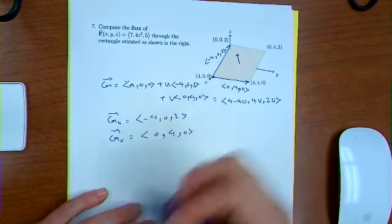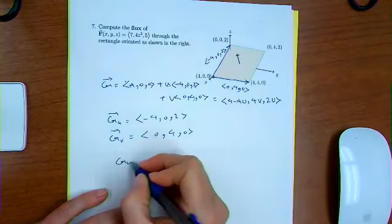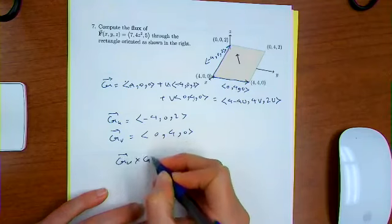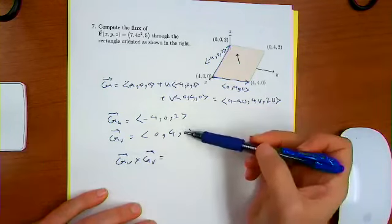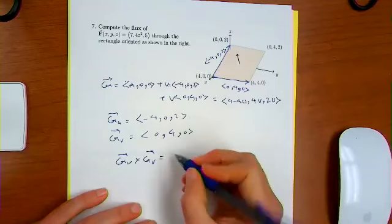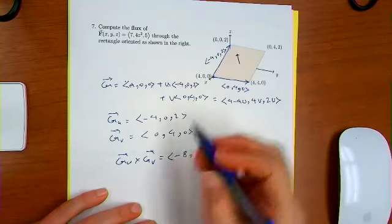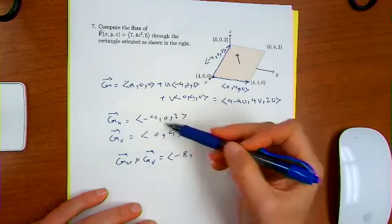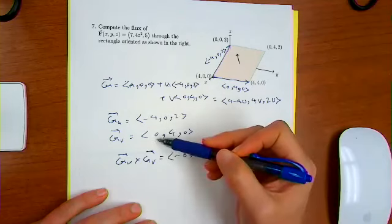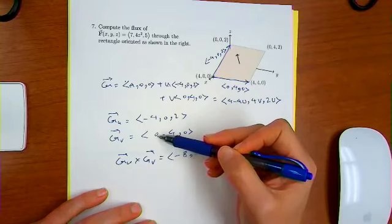Now crossing this, g sub u cross g sub v is what? It's going to be zero minus eight. And then I will have minus, minus four times zero, minus, minus two,